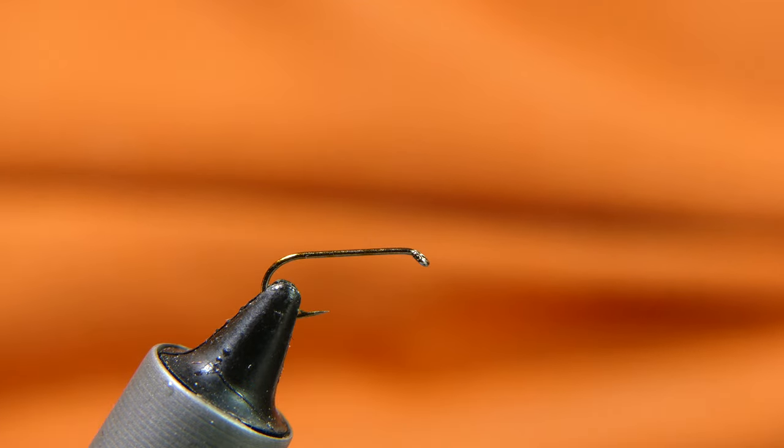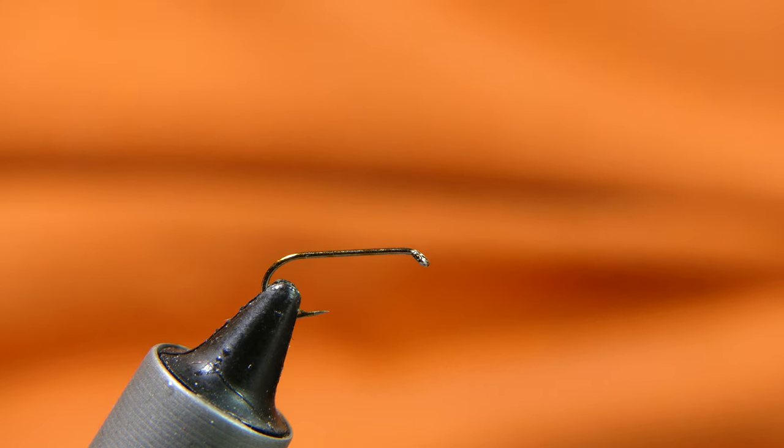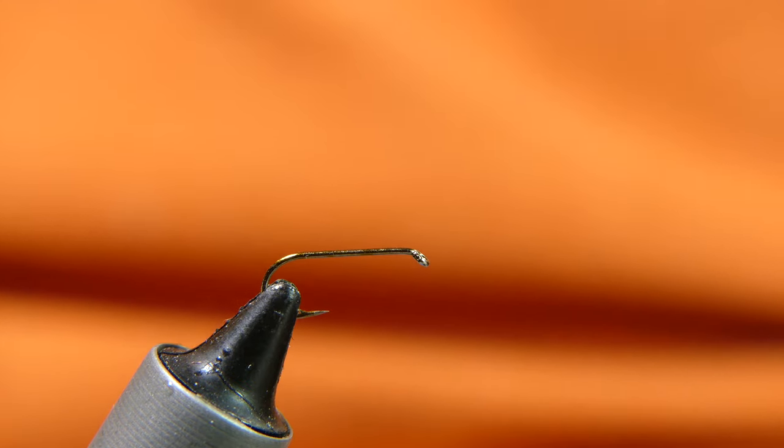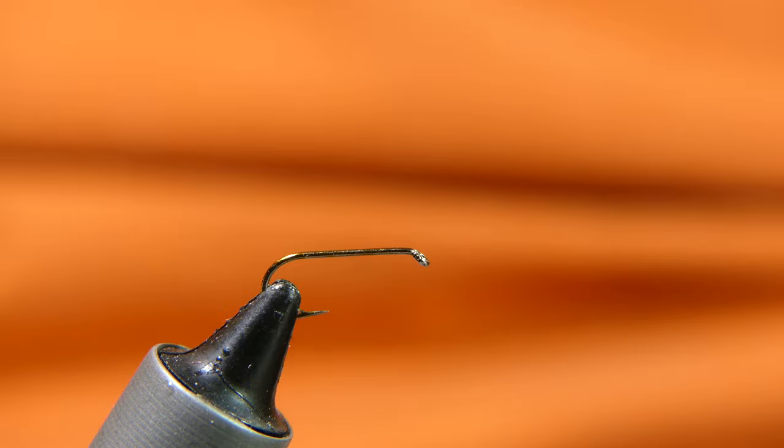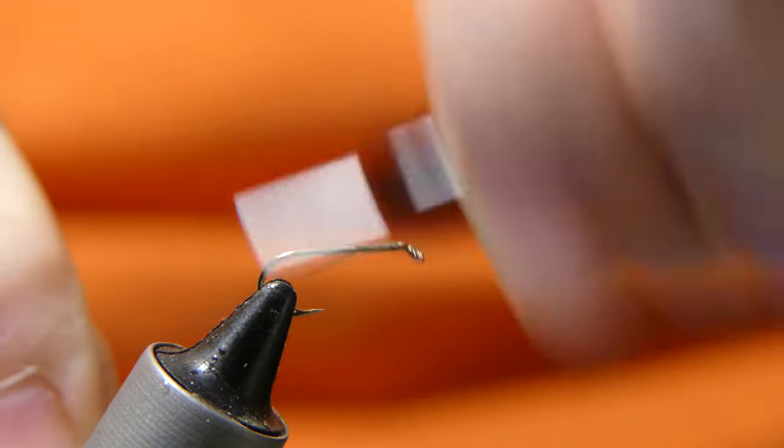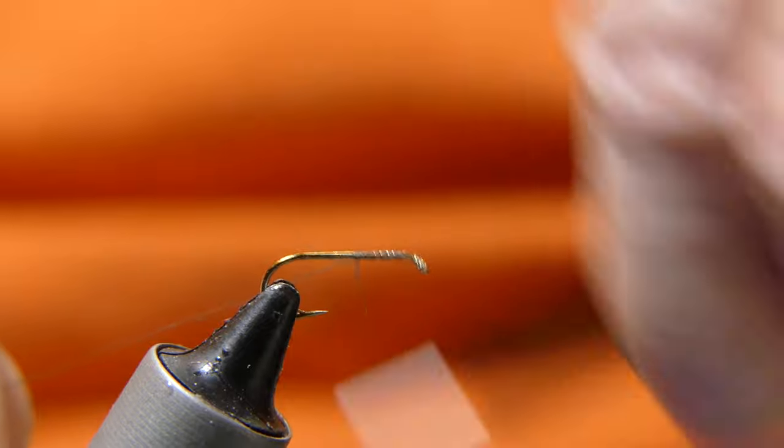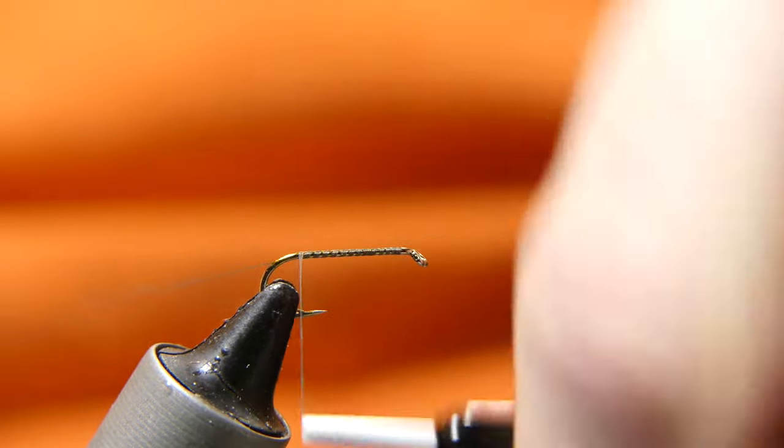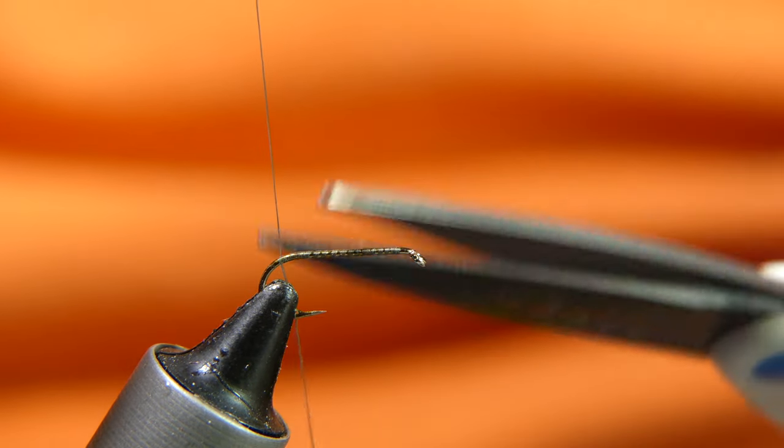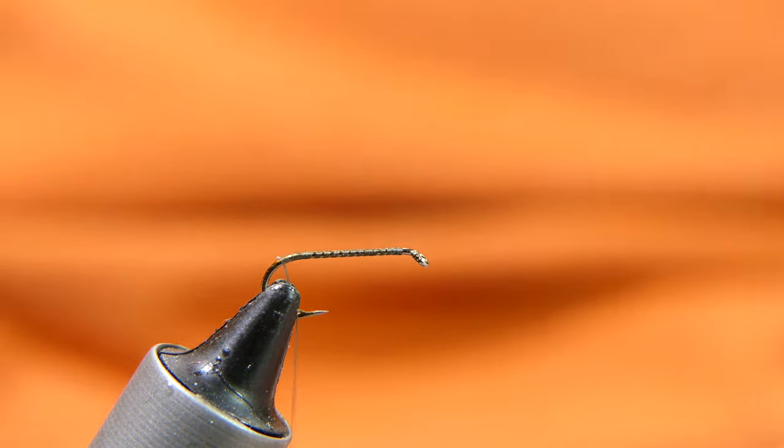It's kind of tied in the style of a black stonefly. The hook I'm using is just a standard number 12 dry fly hook, nothing special about it. And the thread I'm going to be using is 72 denier uni-thread.